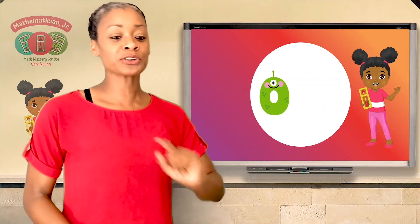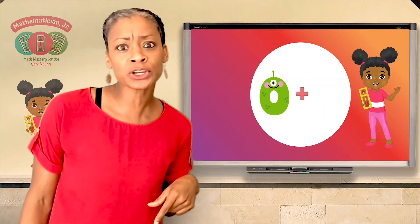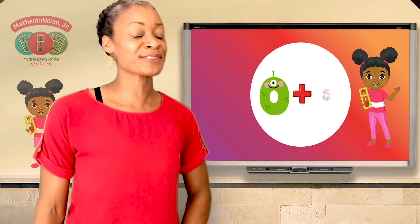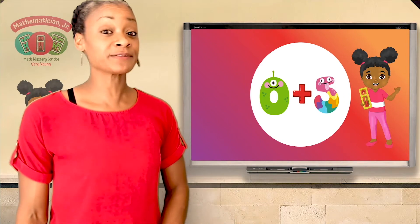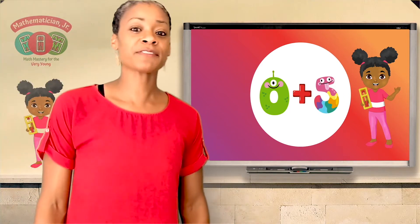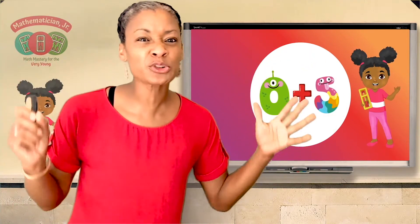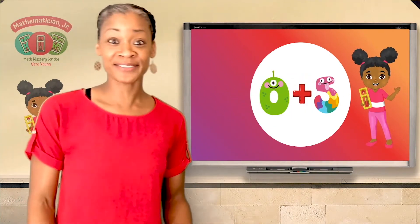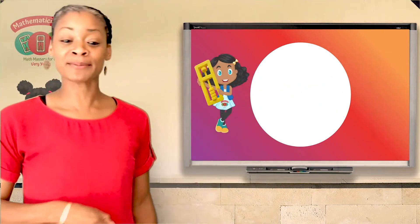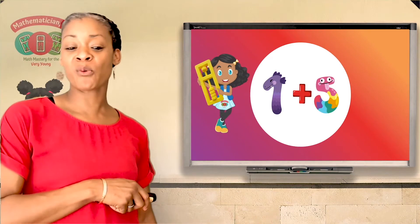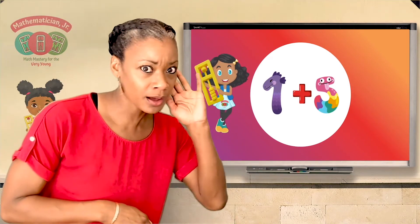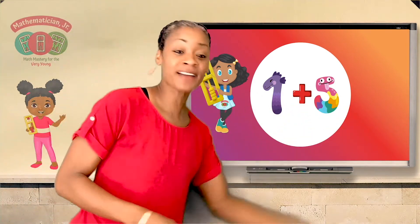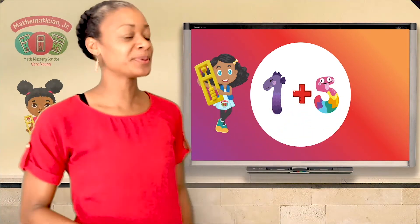You're going to see two numbers on the screen with a plus sign in the middle. Check whether they are friends of five. If they are friends of five, say 'check.' If they're not, sound like a big truck. Ready? Zero and five — check, good job! Next: one and five — no, they're not friends of five. One and five is too big.